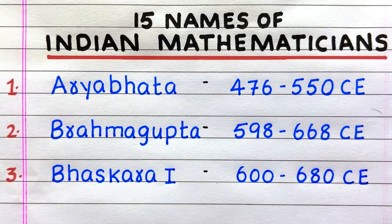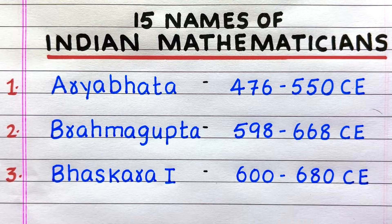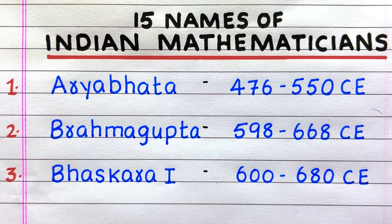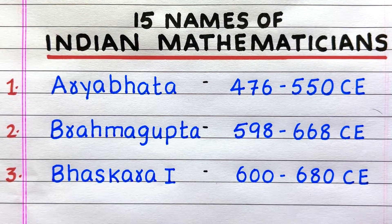The name of the first Indian mathematician is Aryabhatta. Second, Brahmagupta. Third, Bhaskara 1.